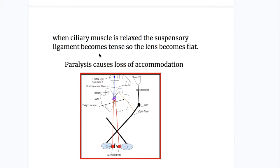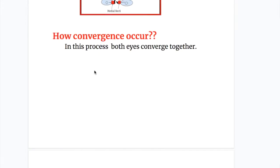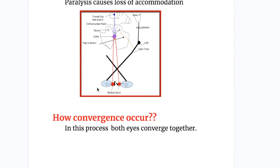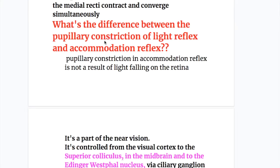In the convergence process, both medial recti contract. Information comes from the frontal eye field to the medial rectus component of the oculomotor nucleus, and from the oculomotor nucleus simultaneously to the medial rectus muscles to contract and cause convergence.